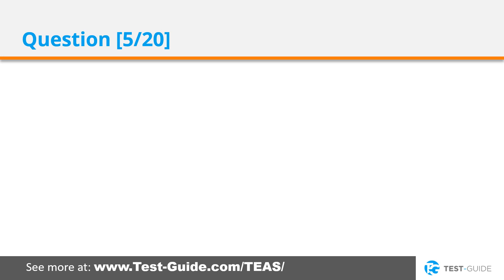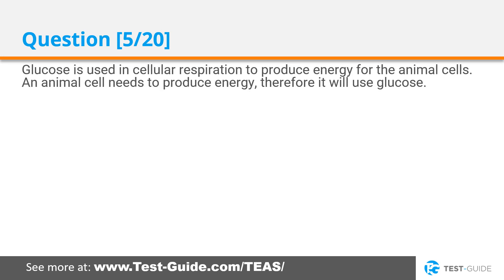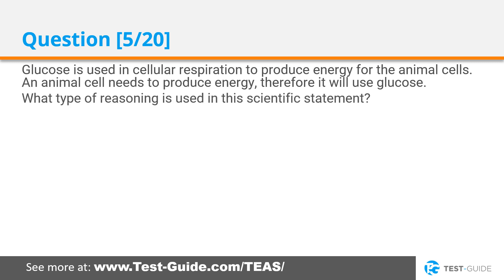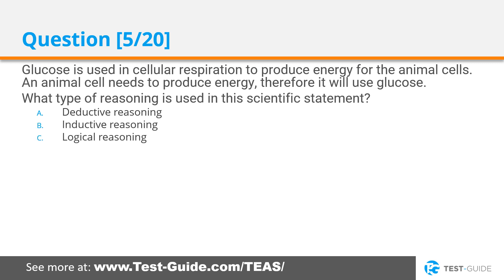Question 5. Glucose is used in cellular respiration to produce energy for animal cells. An animal cell needs to produce energy, therefore it will use glucose. What type of reasoning is used in this scientific statement? Deductive reasoning, inductive reasoning, logical reasoning, indirect reasoning.